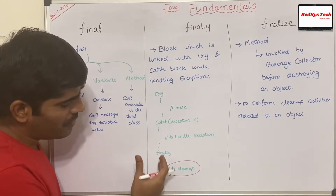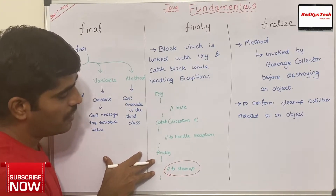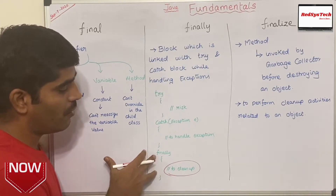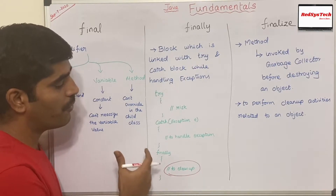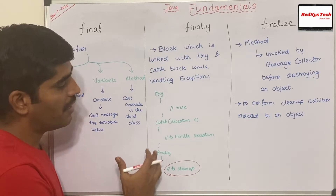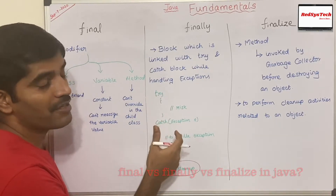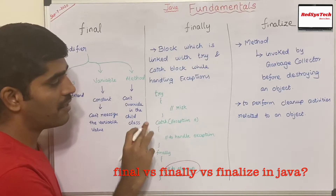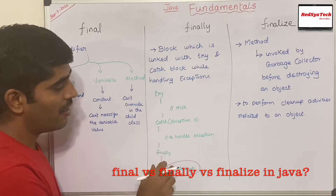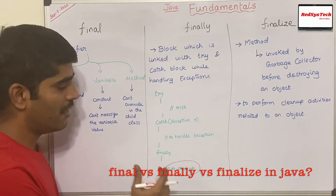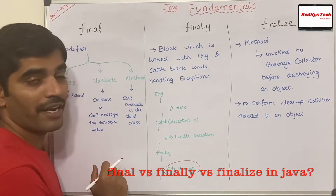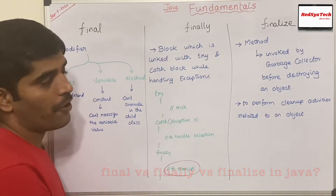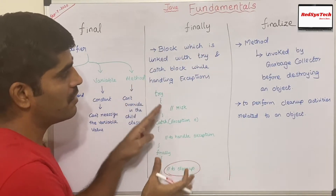This finally block is used for cleanup activities related to the try and catch. The real reason why we use the finally block is that if any exception happens — whether the try-catch handles it or not — if you want to perform some operation regardless, then you use the finally block. That is the beauty of the finally block in Java.